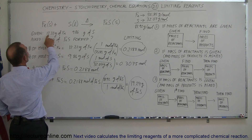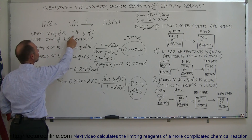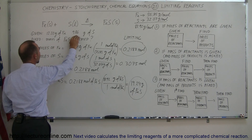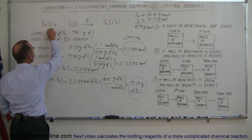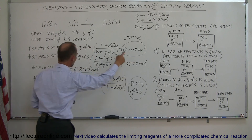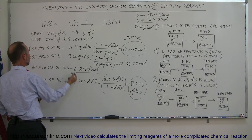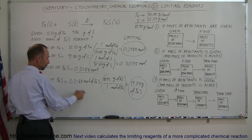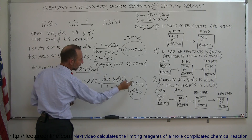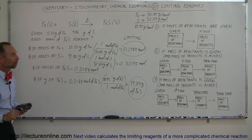Given 12.22 grams of iron and 9.86 grams of sulfur, iron was the limiting factor and sulfur was not. We found how many moles of iron we had — 0.2188 moles — which equals the same number of moles of iron sulfide due to the one-to-one ratio. Converting using the molar mass of iron sulfide at 87.92 grams per mole gives us 19.24 grams of the final product. And that's how you do that.